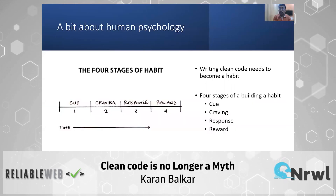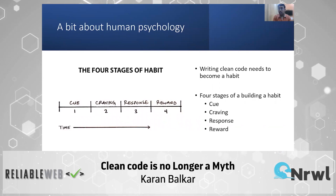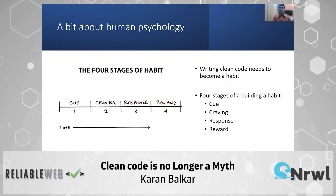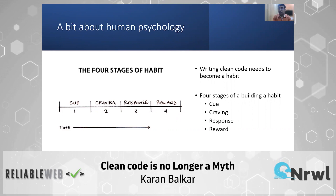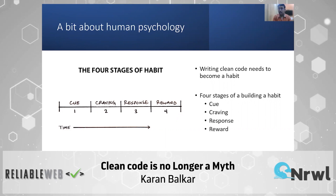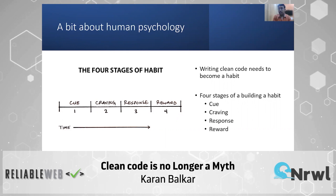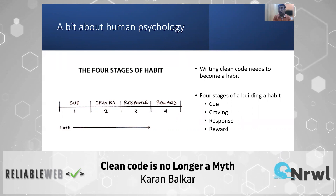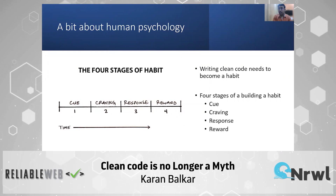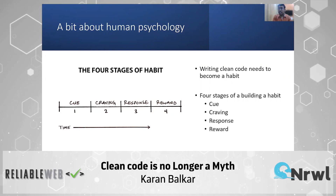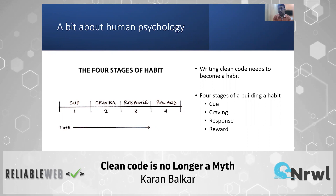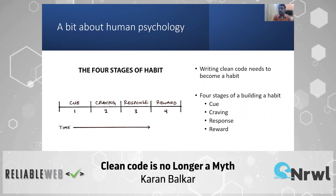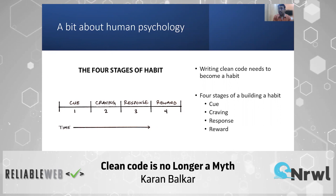As humans, we all develop habits. Habits are something which are not developed overnight, and writing clean code also needs to become a habit. The four stages by which one can build a habit are: cue, craving, response, and reward. A cue is something that triggers the brain to initiate a behavior, providing a bit of information about the end reward. Craving is the motivational force behind developing the habit. The response forms the actual habit itself, and the reward is the end result of developing this habit.